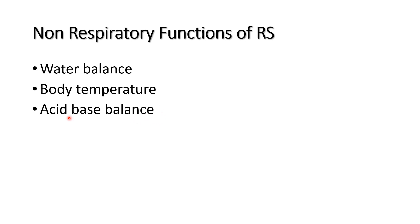The respiratory system is important for maintaining acid-base balance. The tissues produce carbon dioxide, which combines with water to form hydrogen ions and bicarbonate ions, and this maintains the acid-base balance.